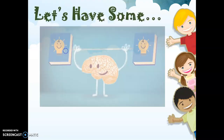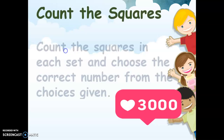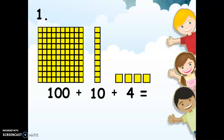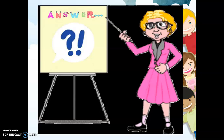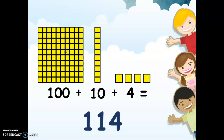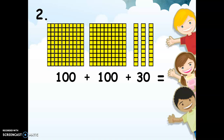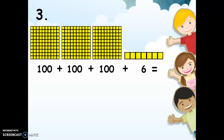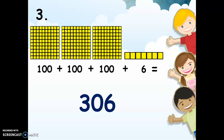So let's have some brain exercise. Let's count the squares in each set and choose the correct number from the choices given. For number 1, we have 1 flat or 100 blocks, plus 10, plus 4 units — we have 114. Next, 2 flats or 100 plus 100, plus 30 or 3 longs — we have 230 blocks. And number 3, we have 3 flats or 100 plus 100 plus 100, plus 6 units — we have 306.